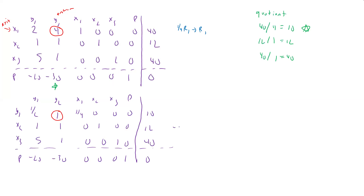Now we perform the remaining row operations. We're going to take minus row 1 plus row 2, and that goes to row 2. We're going to take minus row 1 plus row 3, and that goes to row 3. And we're going to take 30 times row 1 plus row 4, and that goes to row 4. That will give us zeros in those positions. So let's go to the next page.